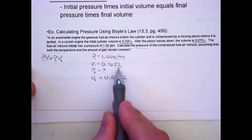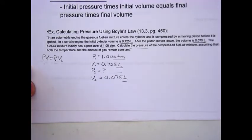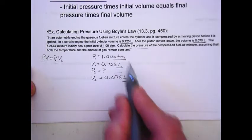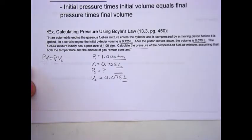Since the volumes are both in liters, we're good. If one was in milliliters, we would have to convert one or the other. It doesn't matter, as long as they both have the same units. And since P1 is in atmospheres, we know the units for P2 are also going to be in atmospheres.